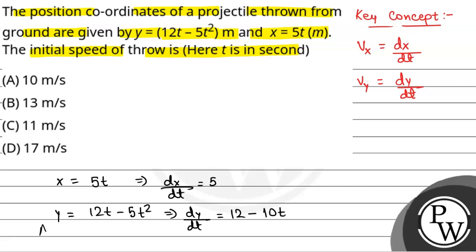So at t = 0, because we need to find initial velocity. So v_y naught will be 12 meters per second and v_x naught will be 5 meters per second.